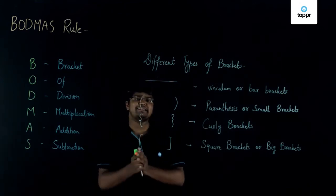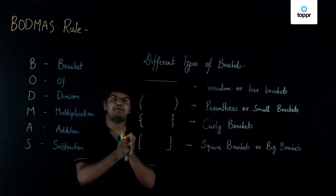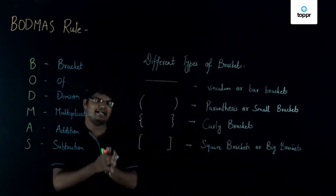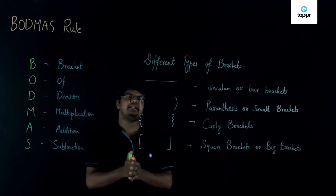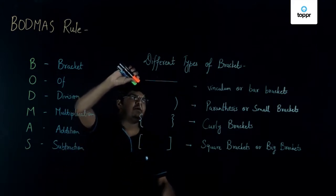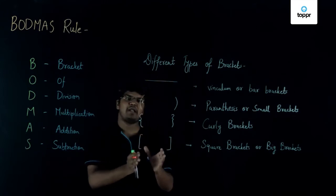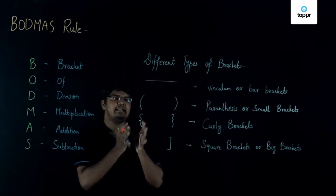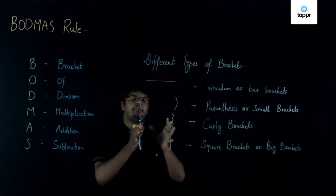Now, what is the need for four such brackets? Well, we don't know how many brackets or how many nested operations a question might contain. So if a question contains three or more nested operations, we might need all these brackets. The most preferred nested operation will first be done by the vinculum or bar brackets, followed by the parenthesis, then the curly brackets, and usually the square brackets are the last ones to solve.